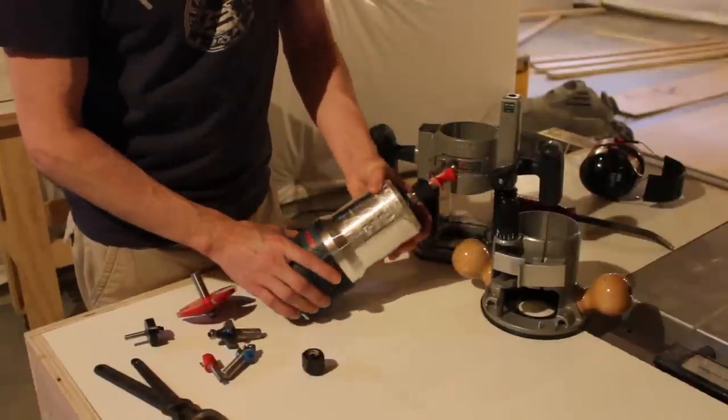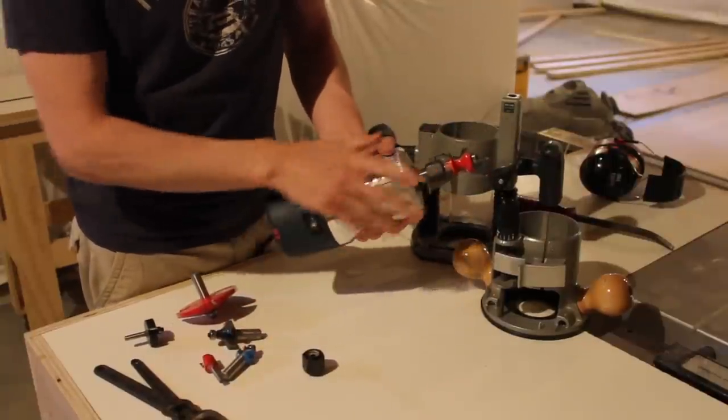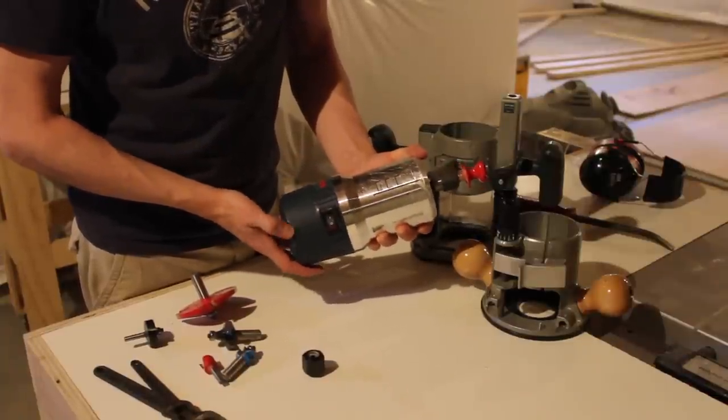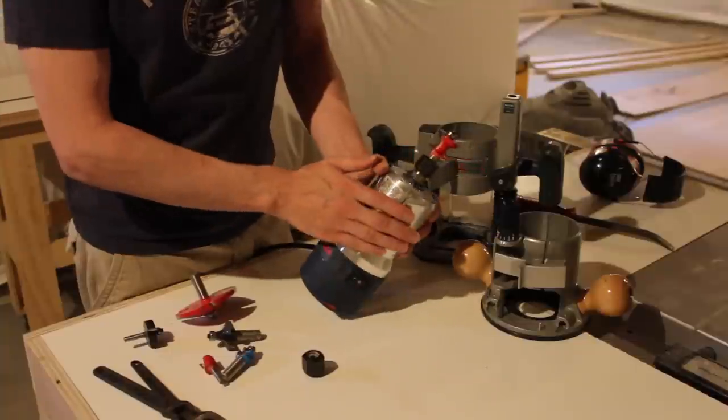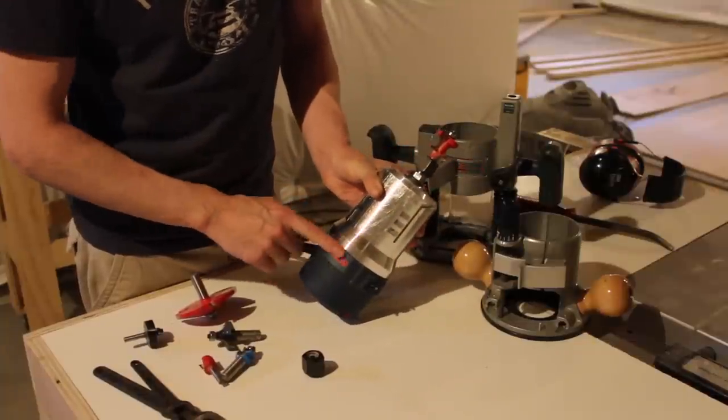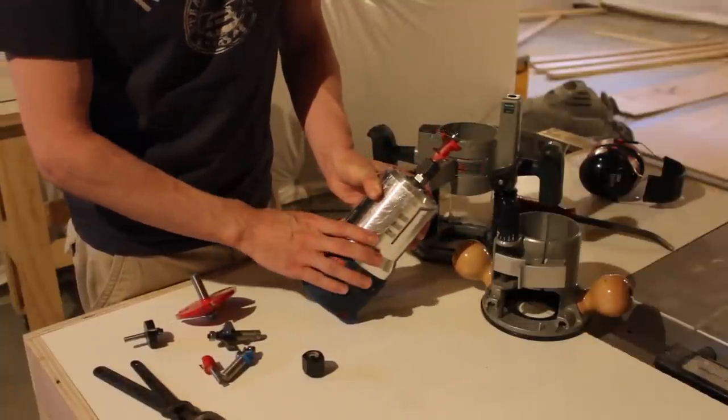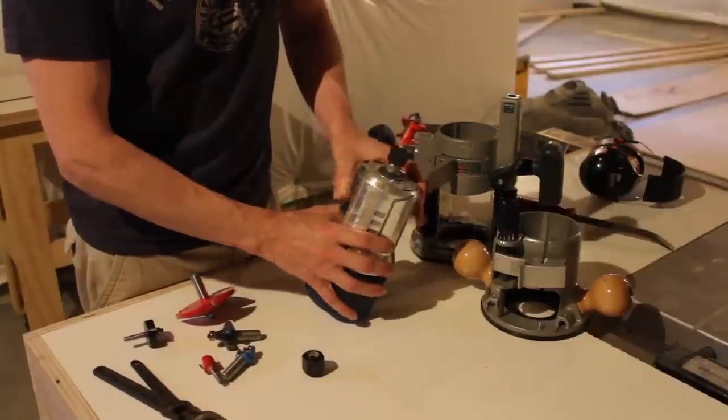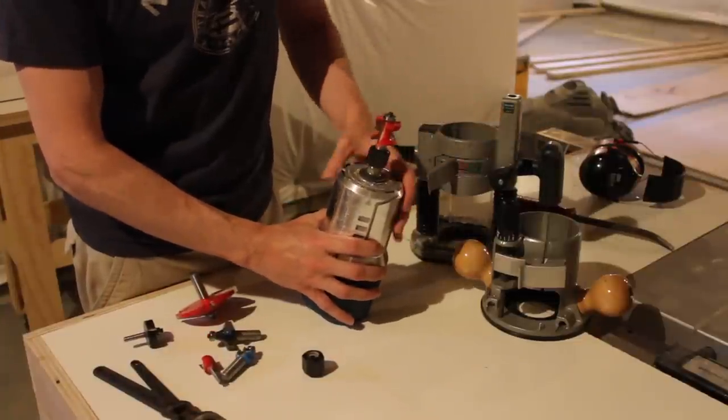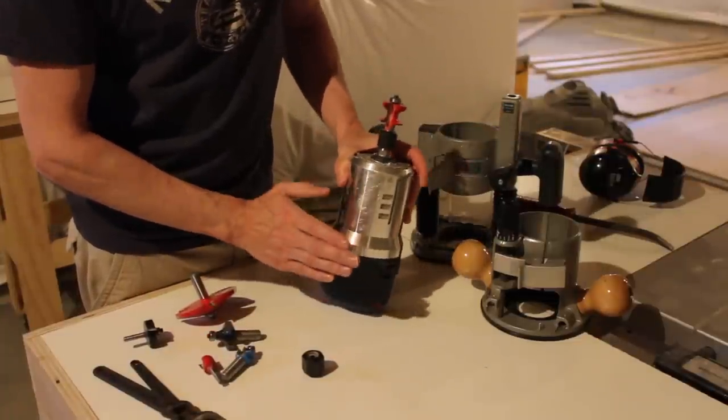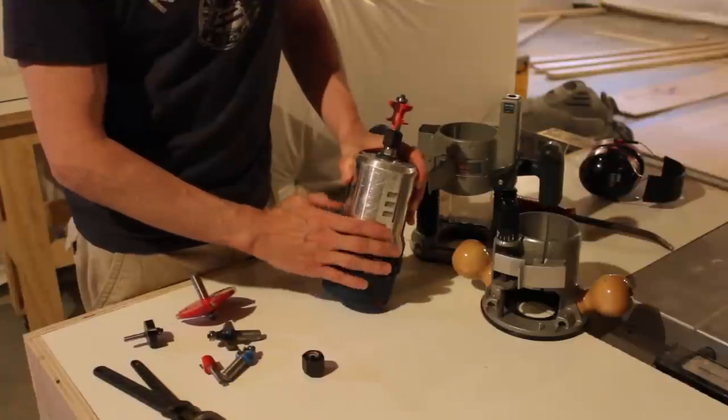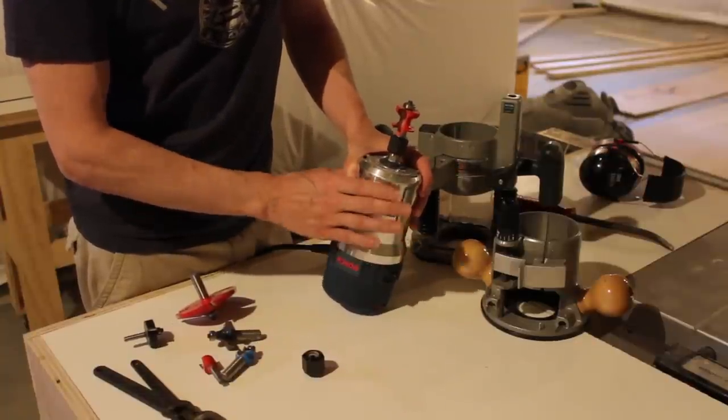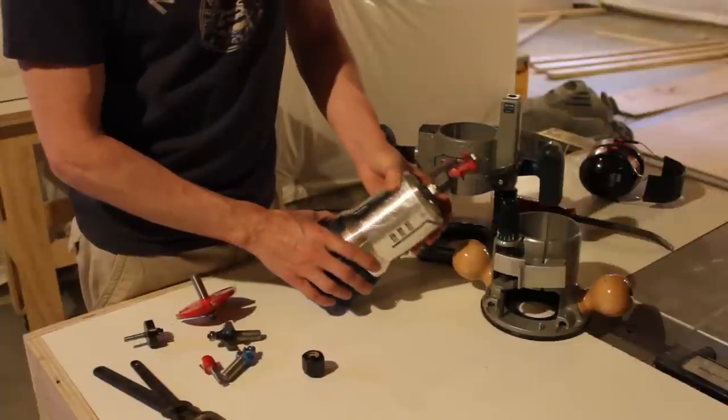A couple of other interesting things worth noting: the router has an on-off switch, and this particular model has a speed adjustment setting. This is a Bosch unit, I think I paid two or three hundred dollars for this particular unit, and it came with a bunch of features. Both collets came with the wrenches, and it also came with two bases.